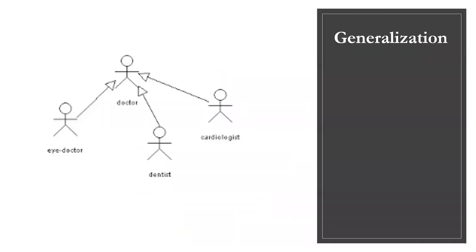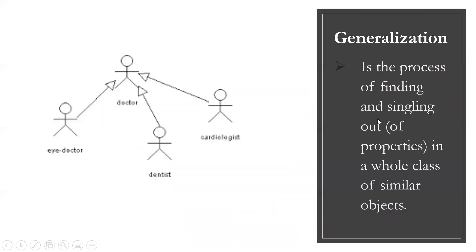Now next is generalization. It is the process of finding and singling out properties in a whole class of similar objects. Just like this: the eye doctor, the dentist, the cardiologist—generally they are called doctor.